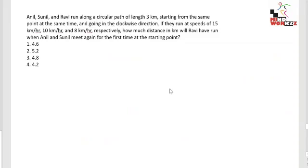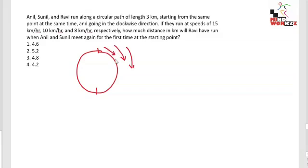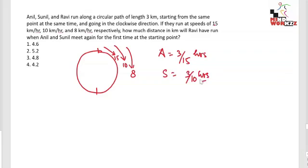Next question: Anil, Sunil, and Ravi run along a circular path of length 3 km, starting from the same point at the same time going in the clockwise direction. Anil travels at 15 km/h, Sunil at 10 km/h, and Ravi at 8 km/h. We need to find how far Ravi has run when Anil and Sunil meet again at the starting point. Time for Anil to complete one round is 3/15 hours, and for Sunil it is 3/10 hours. They meet at the starting point after the LCM of 3/15 and 3/10.